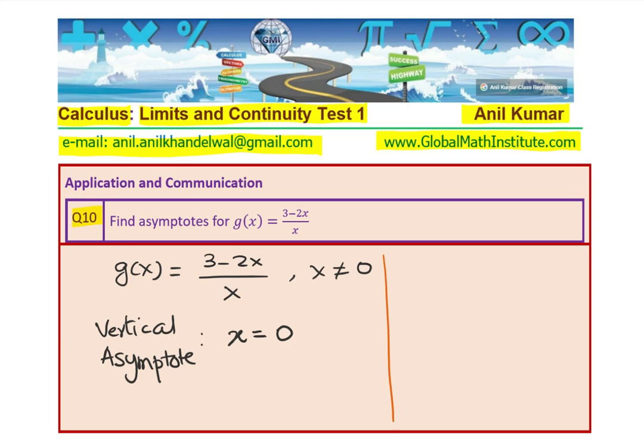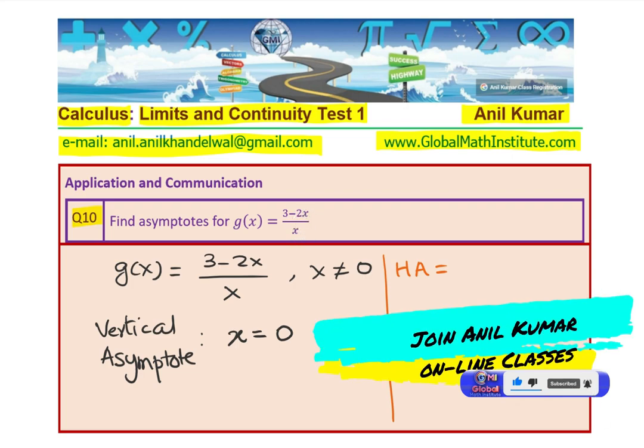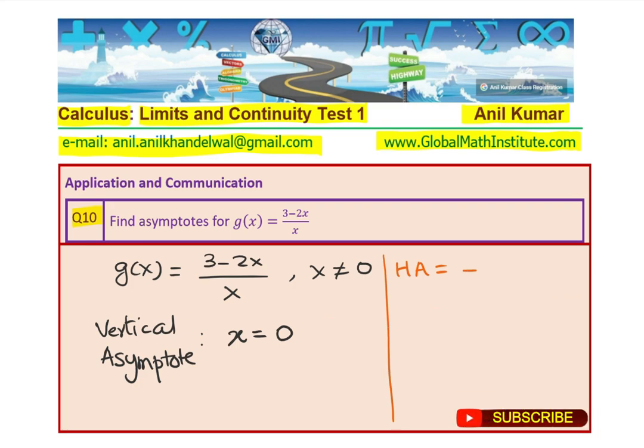Now, in this case, we know that horizontal asymptote can be found directly also. Horizontal asymptote is ratio of leading coefficients for the same degree in numerator and denominator. From that, I can say horizontal asymptote should be minus 2. That is, y equals to minus 2 is the horizontal asymptote.